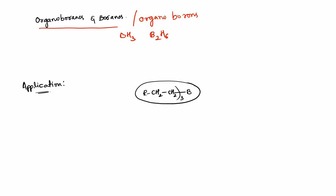Now let us see the different applications of organoborines. First, if you treat organoborines with an alkene or alkyl species — since they are very reactive against them through an addition mechanism — when you treat organoborines with hydrogen peroxide under basic conditions, we obtain alcohols. So this is the first application.